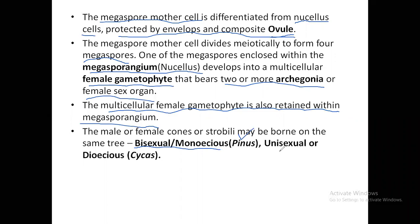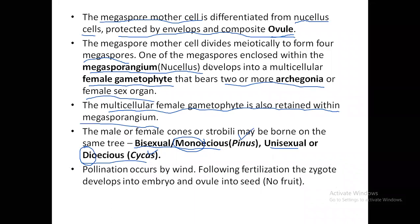If the male and female strobili are present on two different plants, they are called unisexual or dioecious. The word 'mono' means one, so in one organism there are both male and female organs and cones. 'Di' means two, so two different plants exist — one bearing male strobili and the other female strobili. An example is Cycas, where a male strobili plant and a female strobili plant are separate.